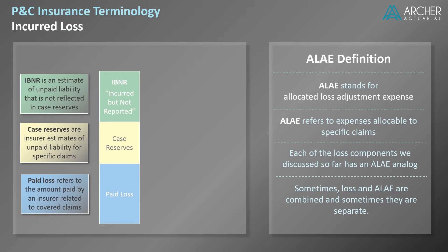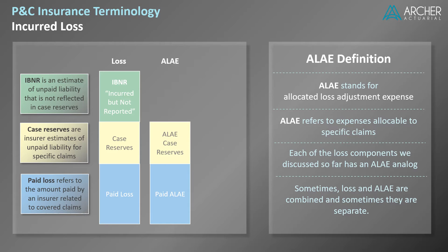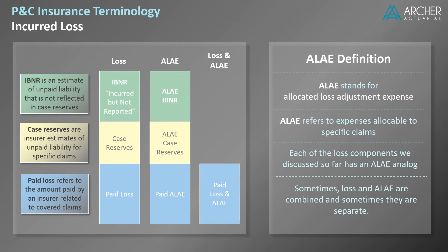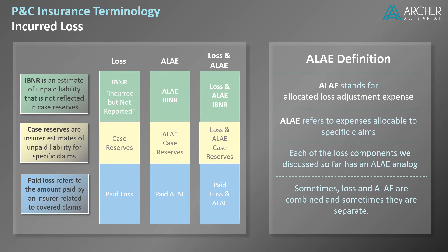In our diagram, we already talked about paid loss, case reserves, and IBNR. These terms describe loss only — that is, they do not include ALAE. The comparable components for ALAE are called paid ALAE, ALAE case reserves, and ALAE IBNR. For loss and ALAE combined, the components are paid loss and ALAE, loss and ALAE case reserves, and loss and ALAE IBNR.